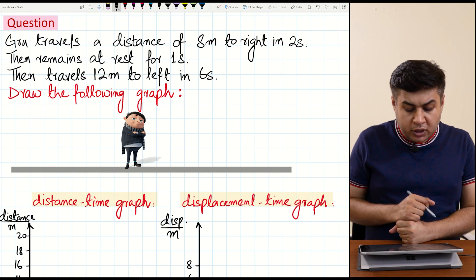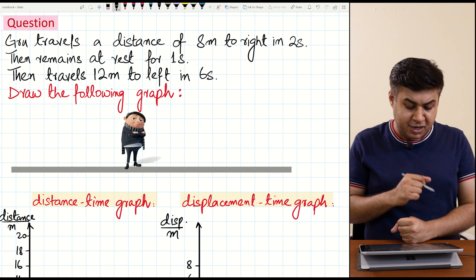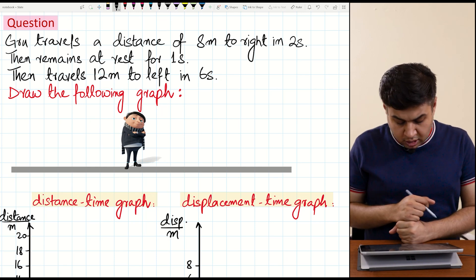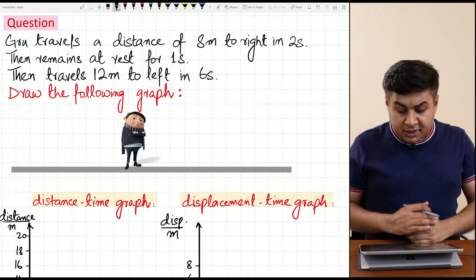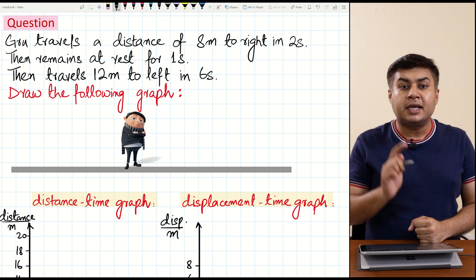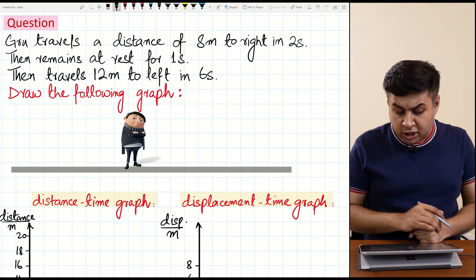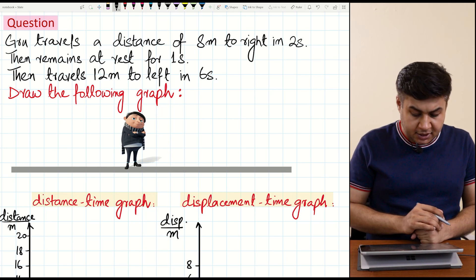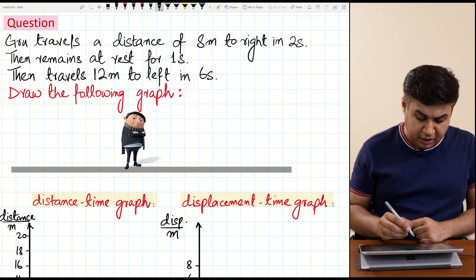The statement of the question involves Gru, who is a main cartoon character from Despicable Me, just to make things interesting and more appealing. Gru travels a distance of 8 meters to the right in 2 seconds, then he remains at rest for 1 second, and then travels 12 meters to the left in 6 seconds. Now if you look at his journey, he is starting from this point.